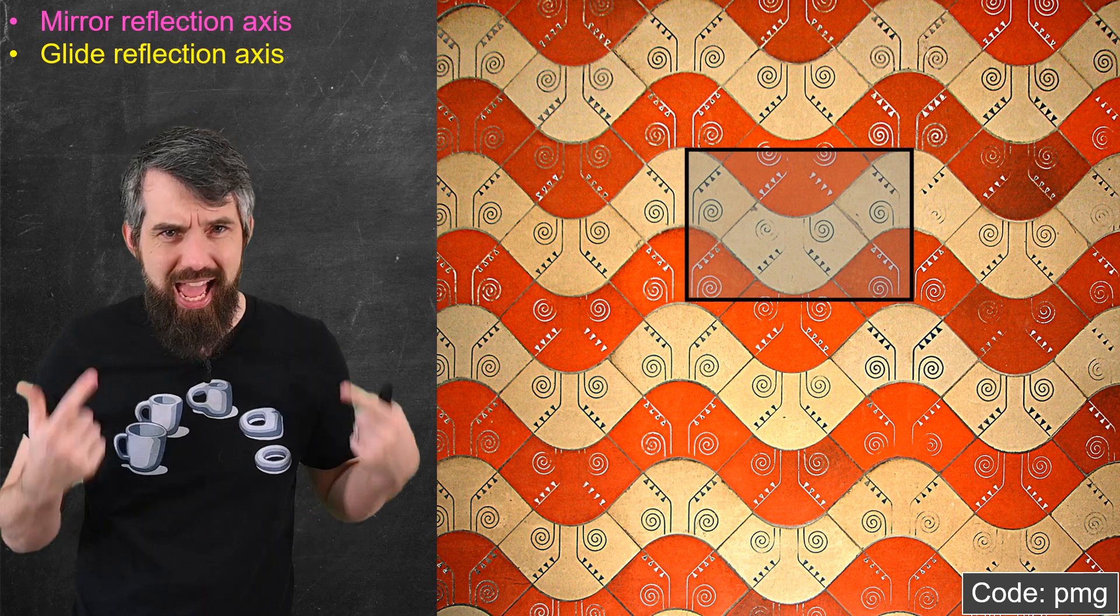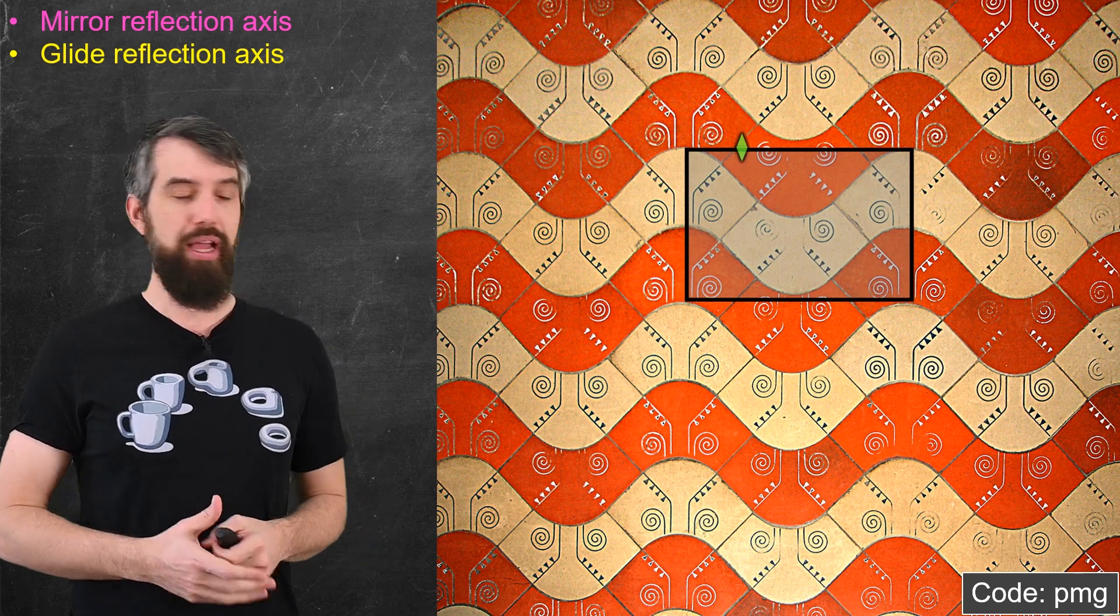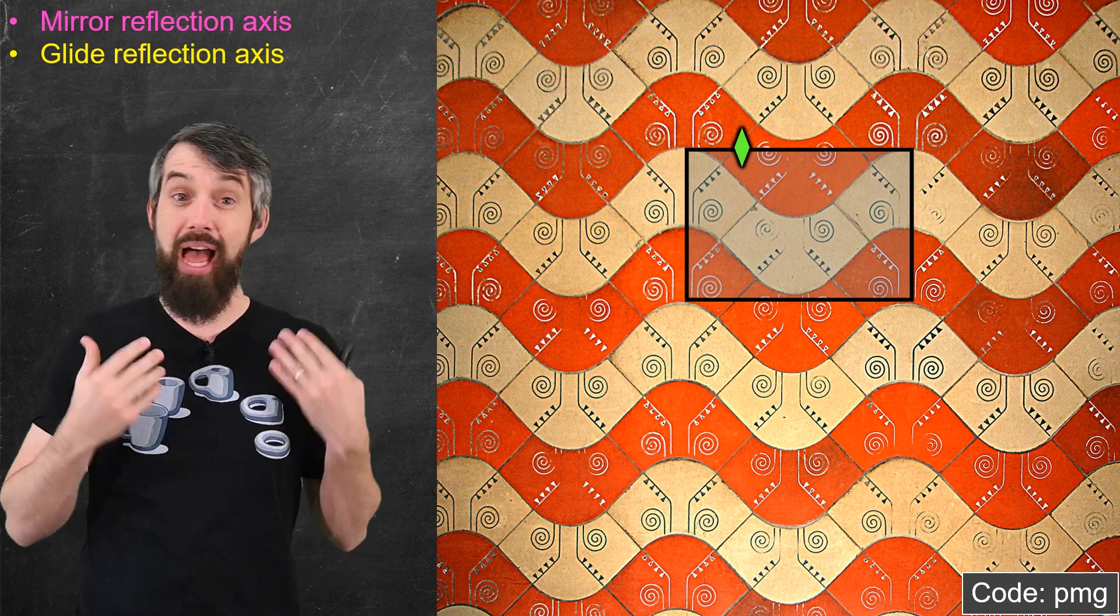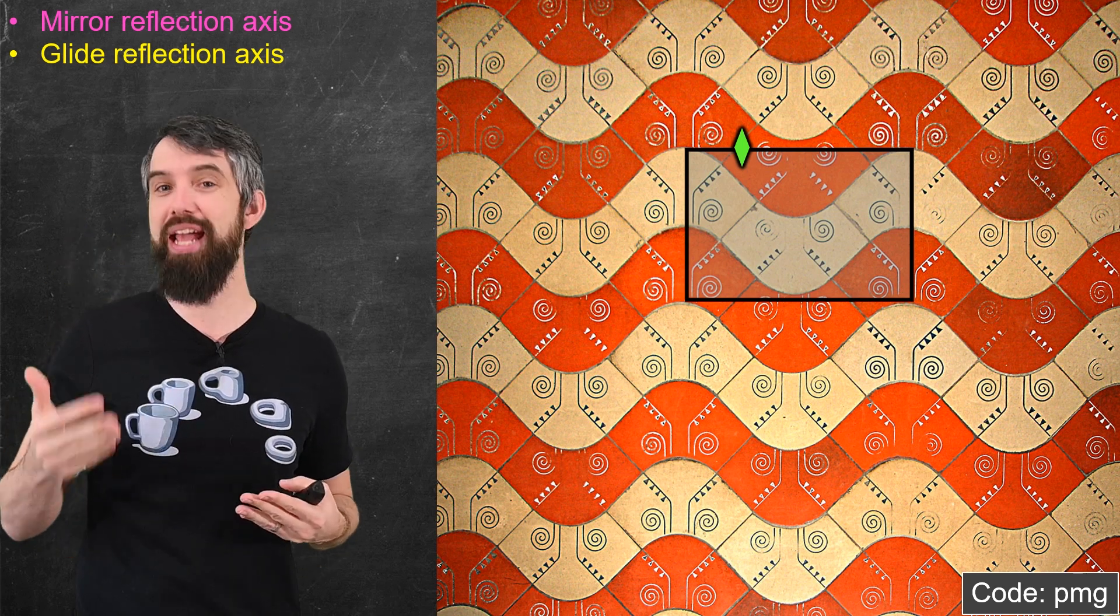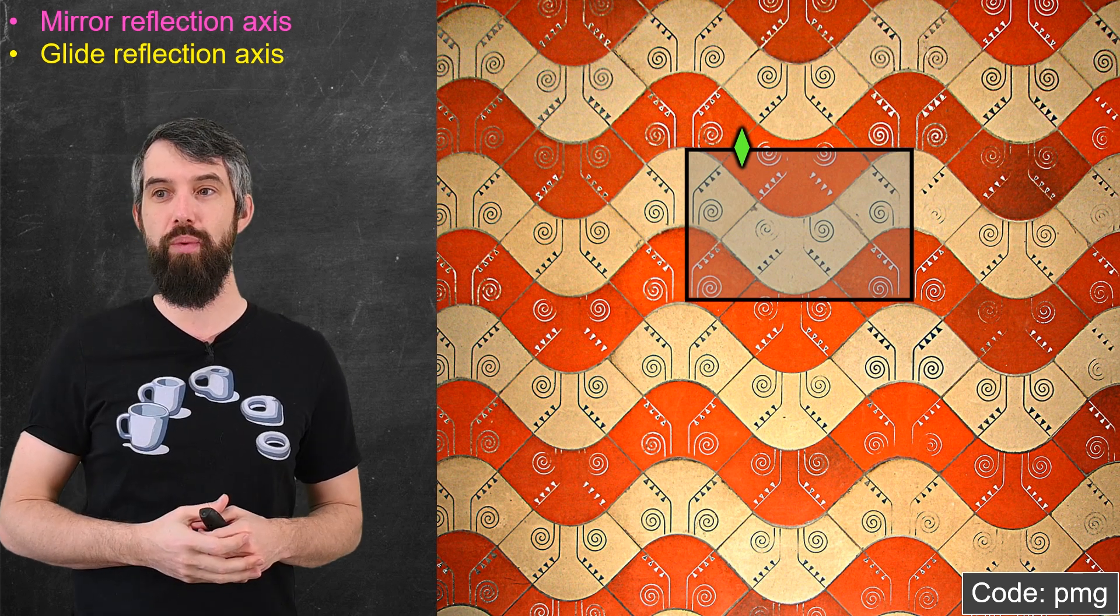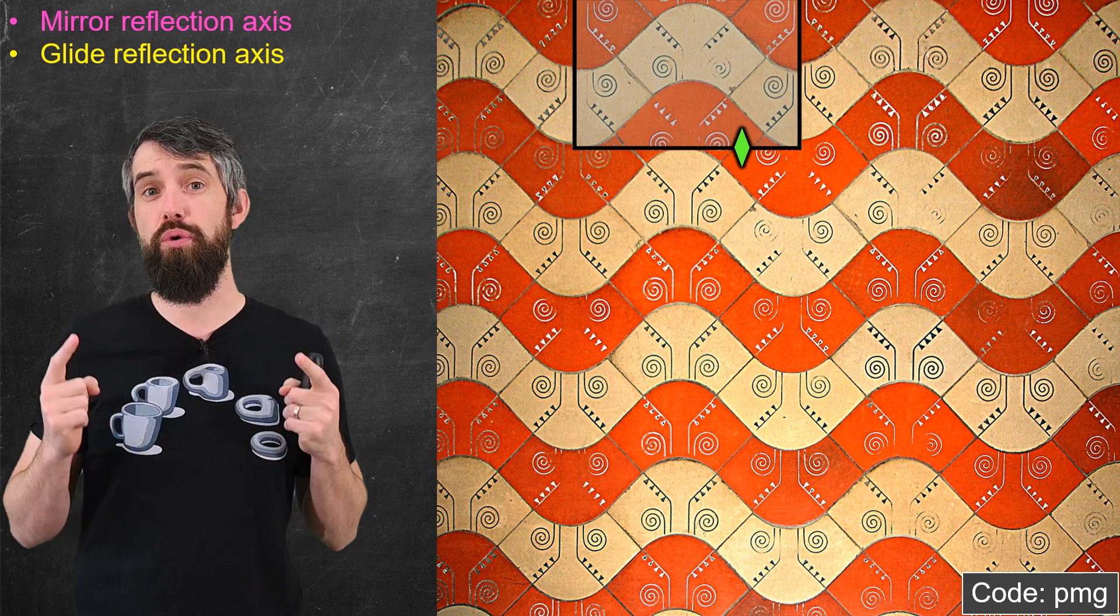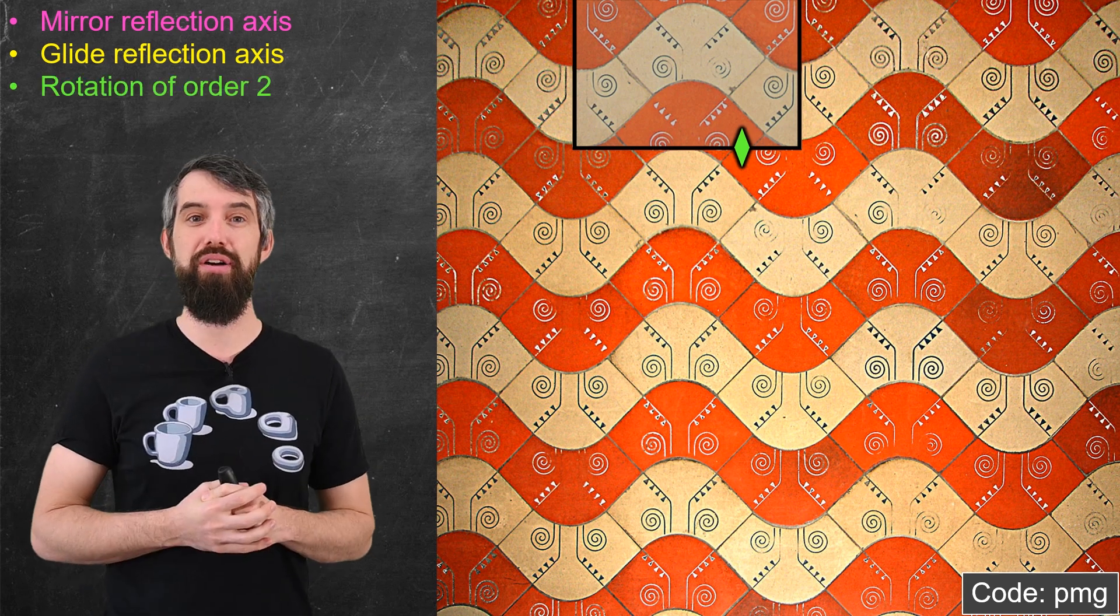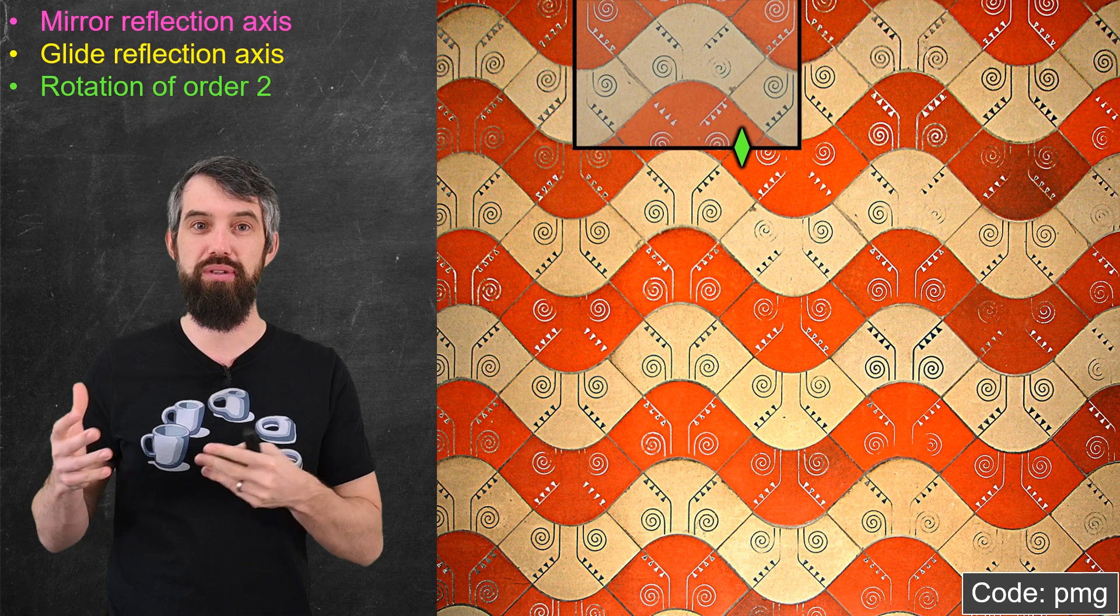So this yellow line is a glide reflection axis perpendicular to the mirror reflection axis. There's also a bunch of rotational symmetries in this particular wallpaper. For example, consider this spot at the top. I'm going to denote this point with a diamond, and a diamond in this video is always going to represent twofold or 180 degree rotational symmetries. Because if I rotate around that point, well, I get to precisely the same thing. I have a twofold rotational symmetry here. I'll record this down as a rotation of order two, because it is twofold or 180 degree rotational symmetry.